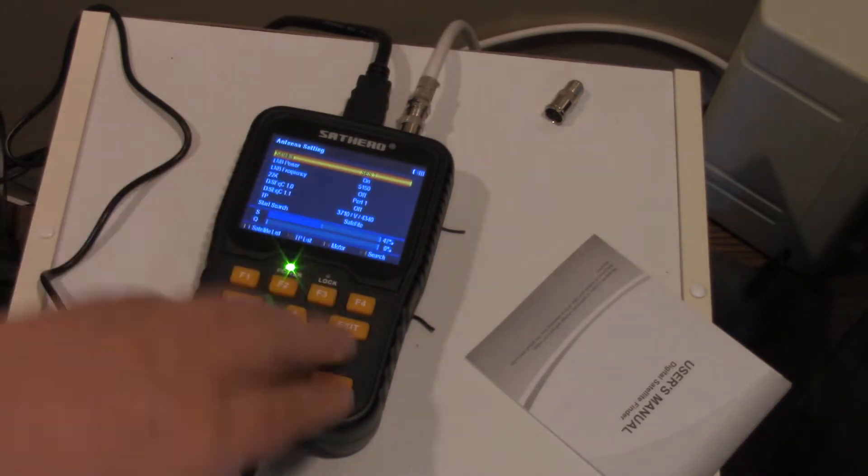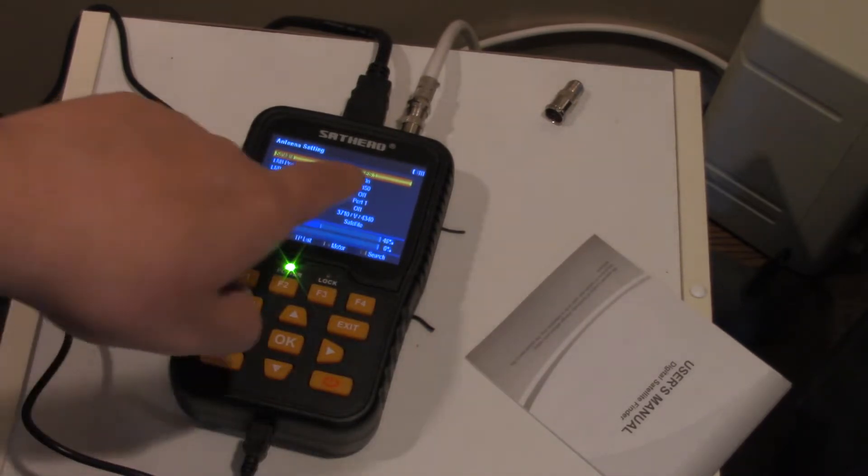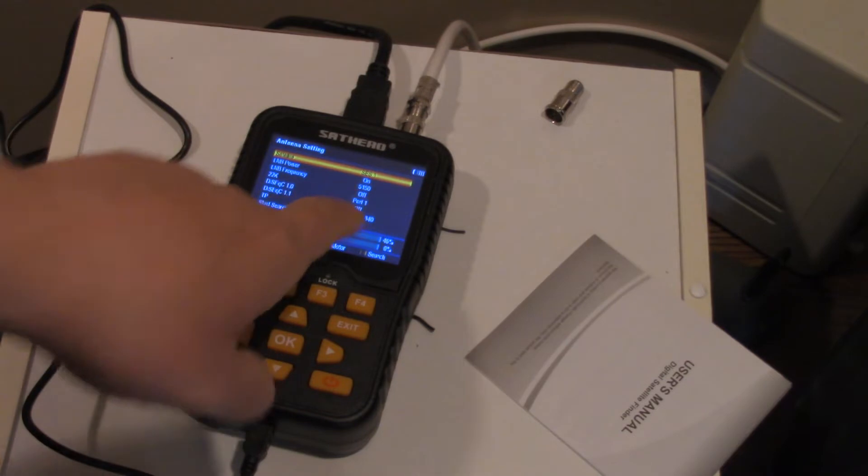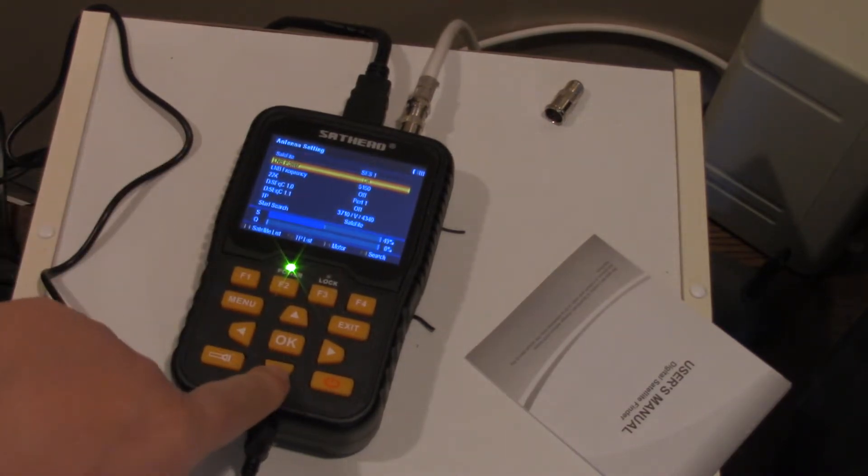What I did is you go finding, but first you want to go installation, antenna setup, hit OK. And I put it on SES-1, which is 101 West, which has Decades and MeTV and channels like that. You want to make sure you have your power on. And for C-band, I have it on 5150 because that's the LNB that I use for C-band. It works on the frequency 5150.